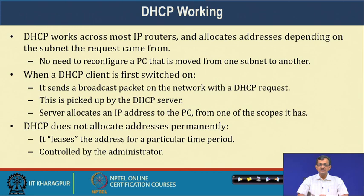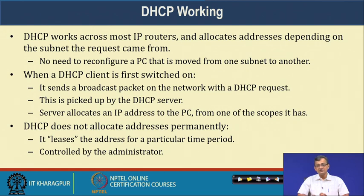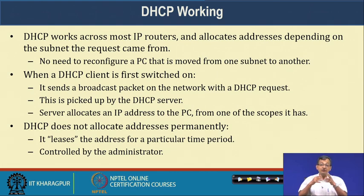DHCP works across most IP routers, allocating IP addresses depending on the subnet from which the request came - there is no need to reconfigure a PC moved from one subnet to another. There are also DHCP relay concepts: if there is no DHCP server within the local network, DHCP relays can forward the request to another network. When a DHCP client first switches on, it broadcasts a DHCP request packet which is picked up by a DHCP server, which then allocates an IP address from one of its scopes.